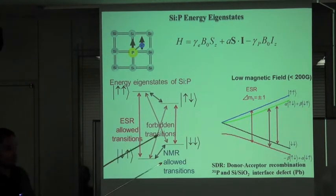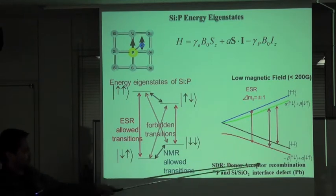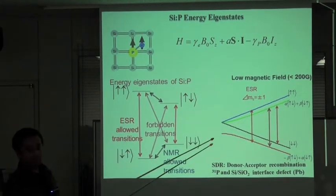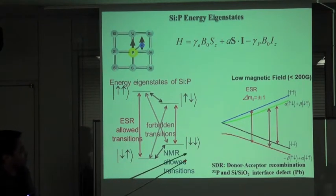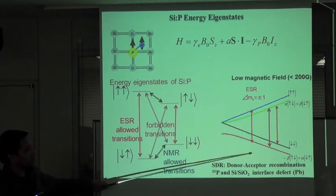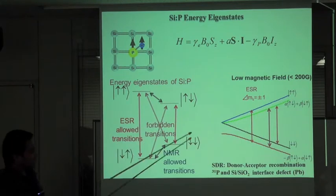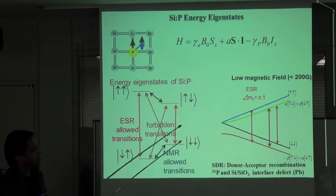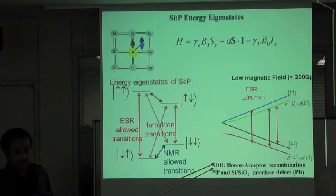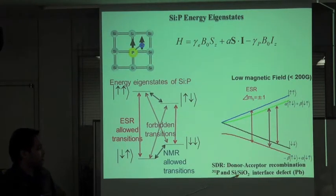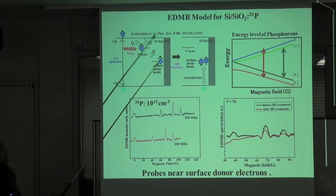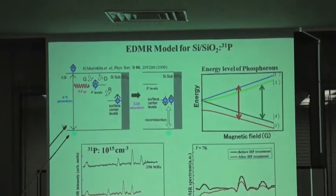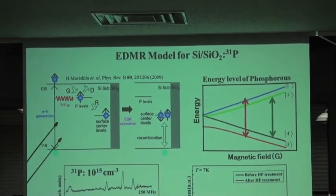The electrical method has the significant advantage that its intensity does not depend upon the magnetic field, so we can easily see this forbidden transition. Indeed, this has been done by our PhD student Morishita, who observed this forbidden transition using low-field EDMR signals. He explains his results using donor-acceptor recombination, where the electron spin of phosphorus and the PV center spins have a spin-dependent recombination channel.